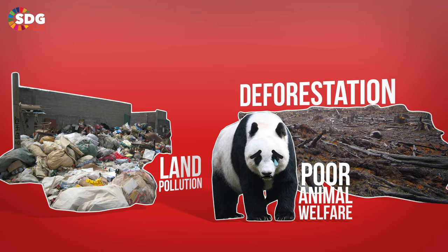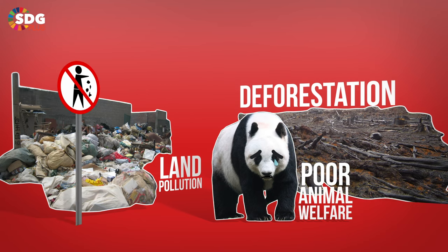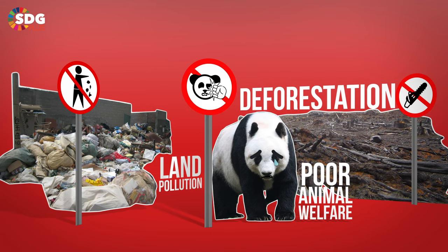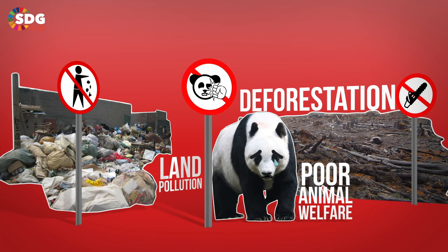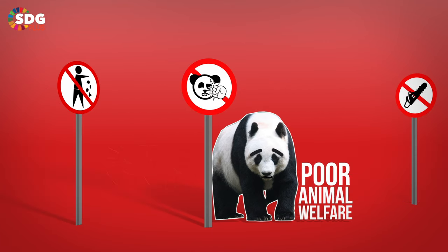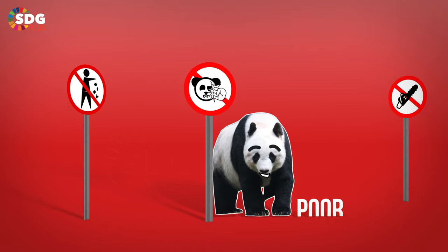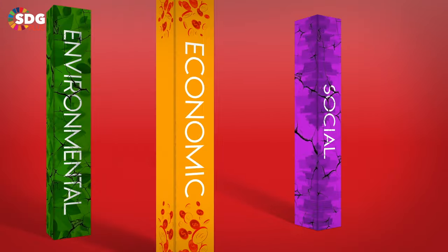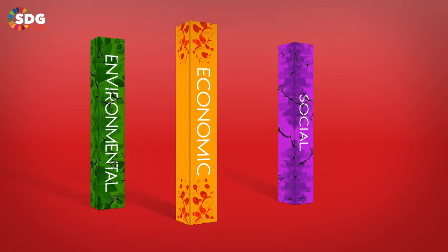To reverse this damage, the Chinese government have recently passed stricter environmental laws and regulations, and pollution levels have started to decline. However, in the end, China's development policy sacrificed its social and environmental pillars for the economic pillar.